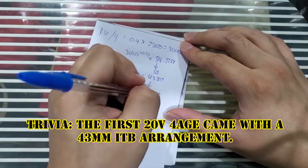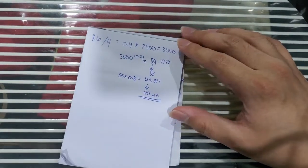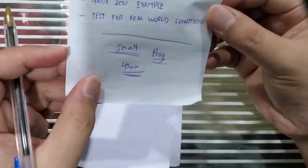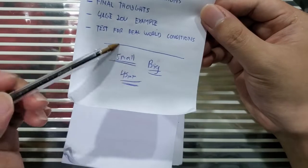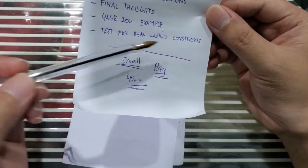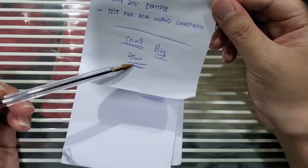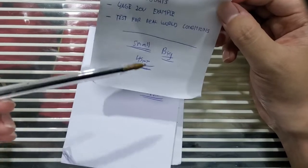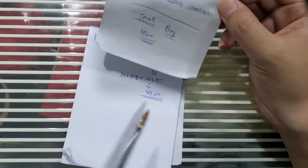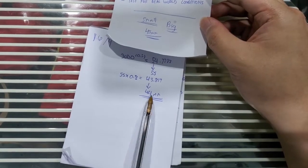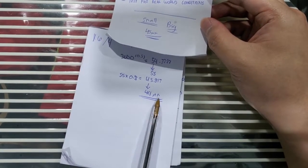And that would give you 43.817, let's call that 44 millimeters. So not too far off—that's where the other aspect I was talking about, test for real world conditions. As I said earlier, Toyota used the 45 millimeter for their 20 valve blacktop 4AG engine.